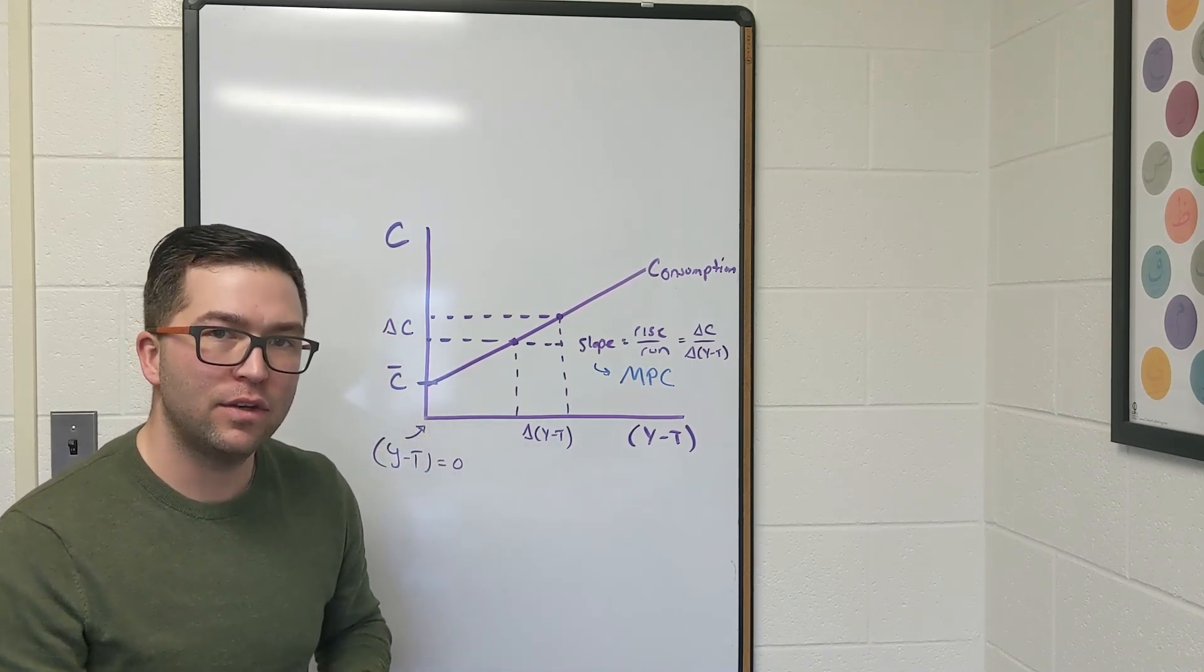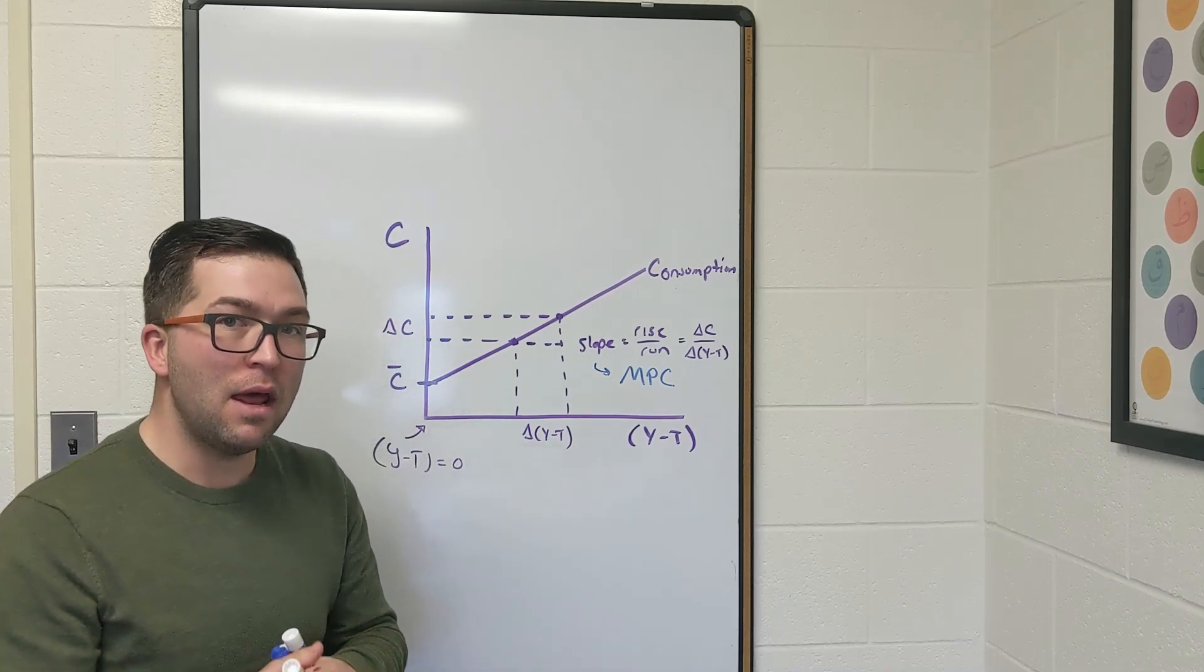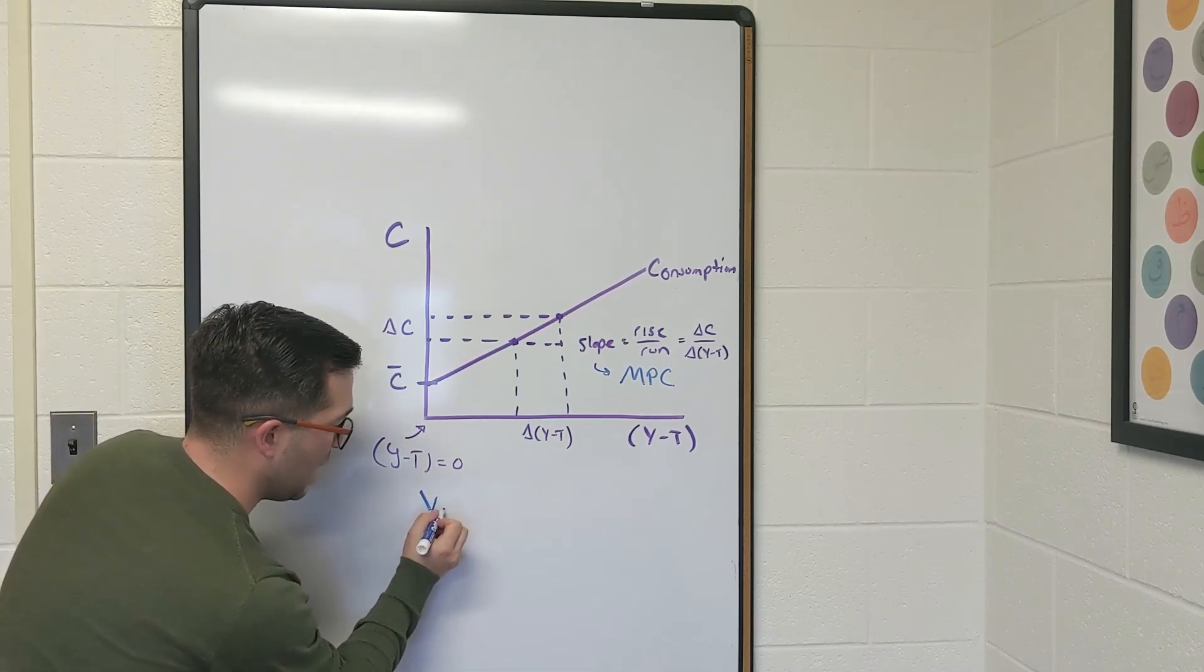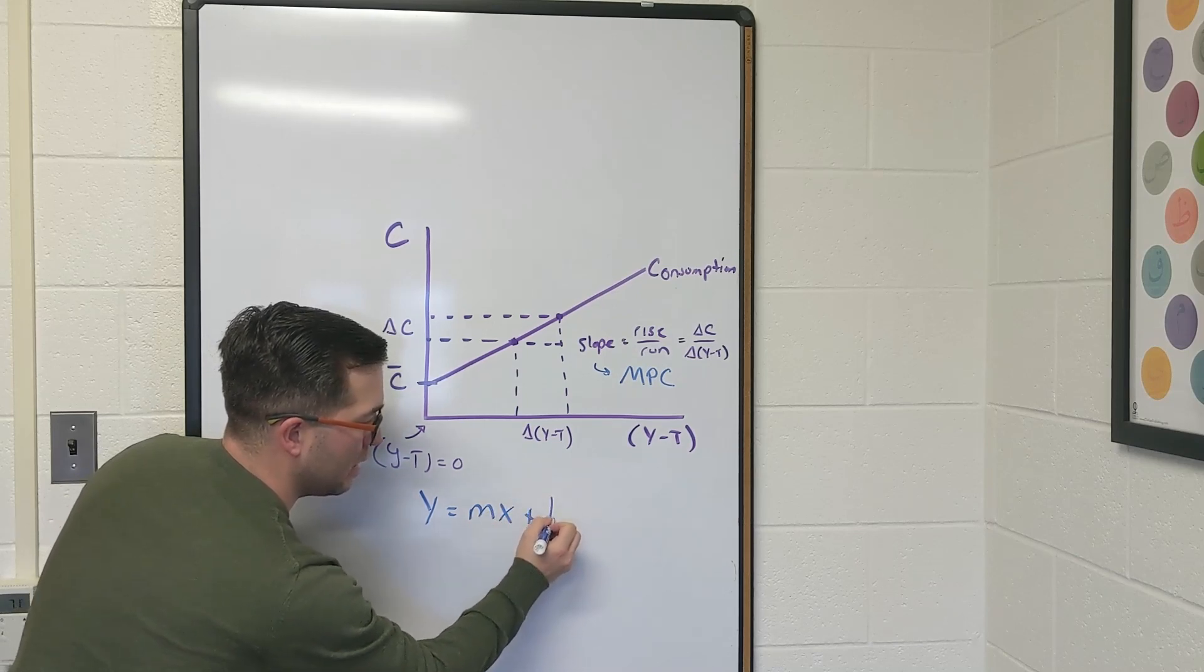We're going to go all the way back to the first time you saw the equation for a line. Most people remember that equation of a line is y equals mx plus b.